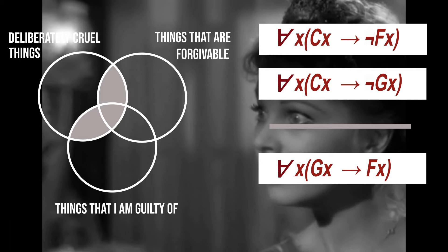If we look at the diagram, we see that the space of things she is guilty of, not overlapping with any other space, is not crossed out nor does it contain a dot. This means that our information is not sufficient to determine whether this space is empty or not — in other words, whether there exist things she is guilty of which are not forgivable. It follows that this is not a valid conclusion, as there is a possible counter-example: a thing she is guilty of which is not forgivable.